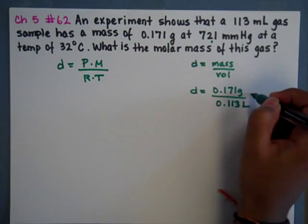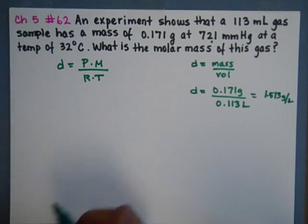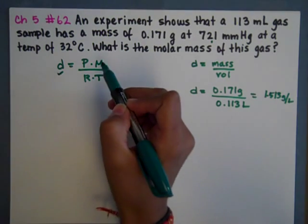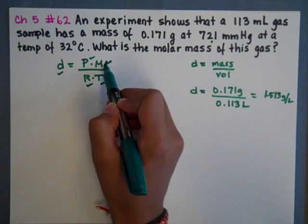Now we have our own density. If you solve this out, it becomes 1.513 grams per liter. So we have a density that we can plug into this. We have a density, we have a pressure, we have a T and we have an R, and we can solve for our M.